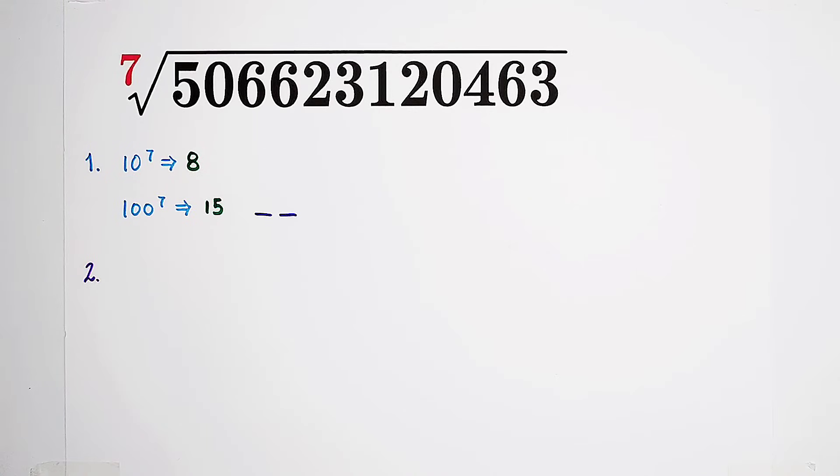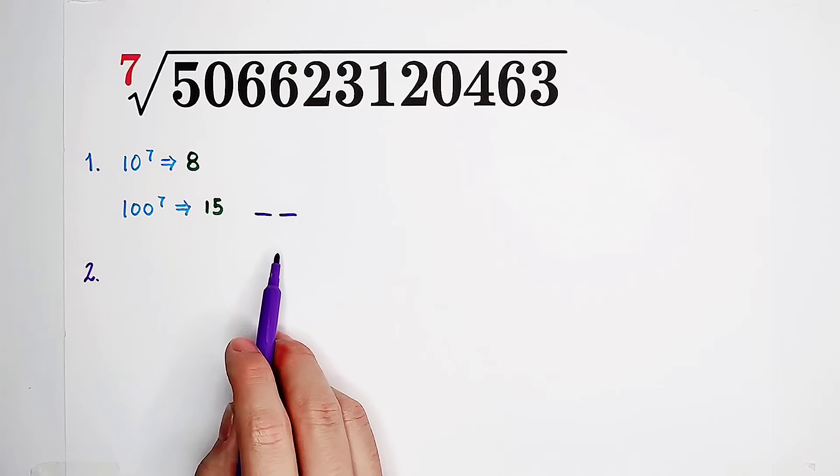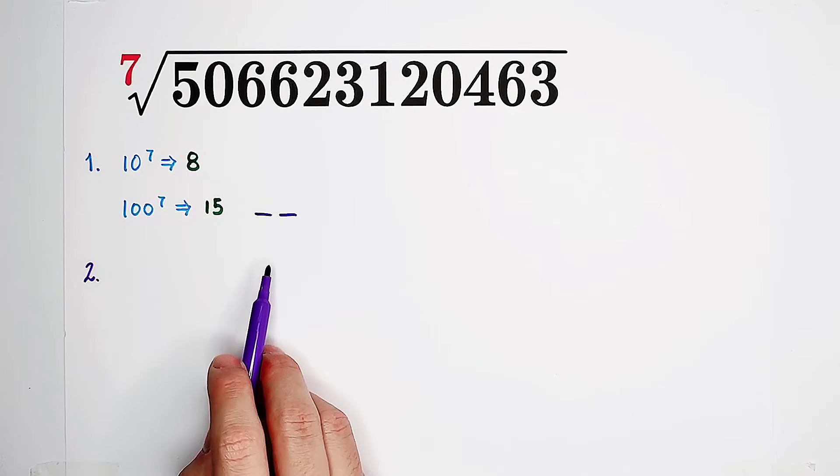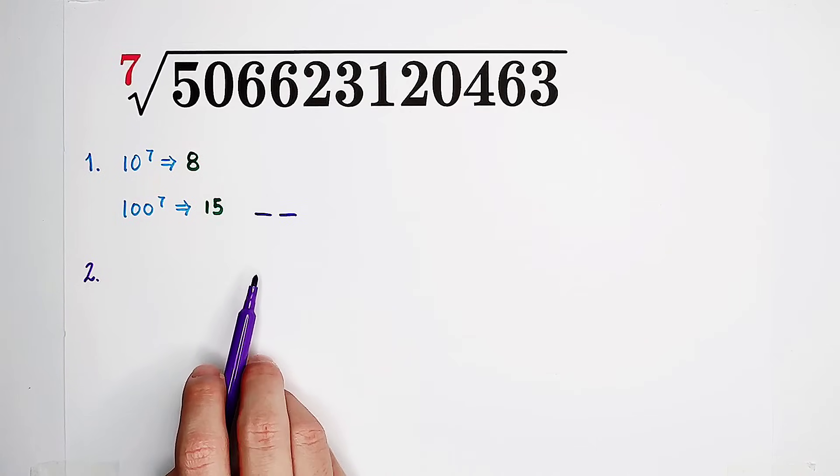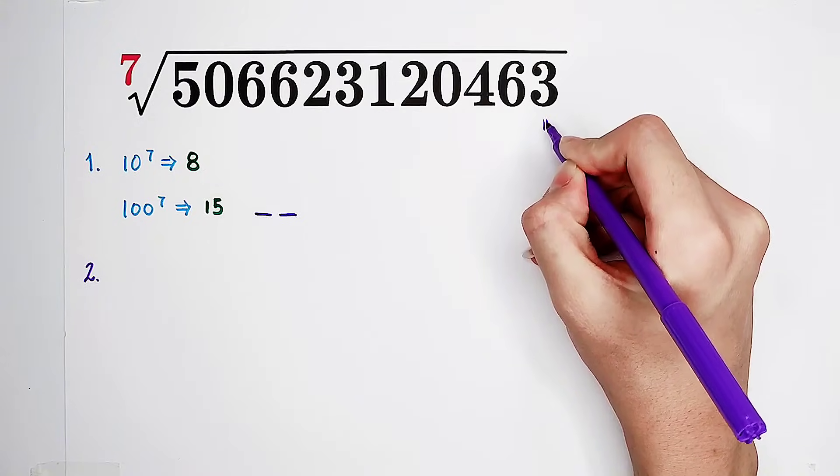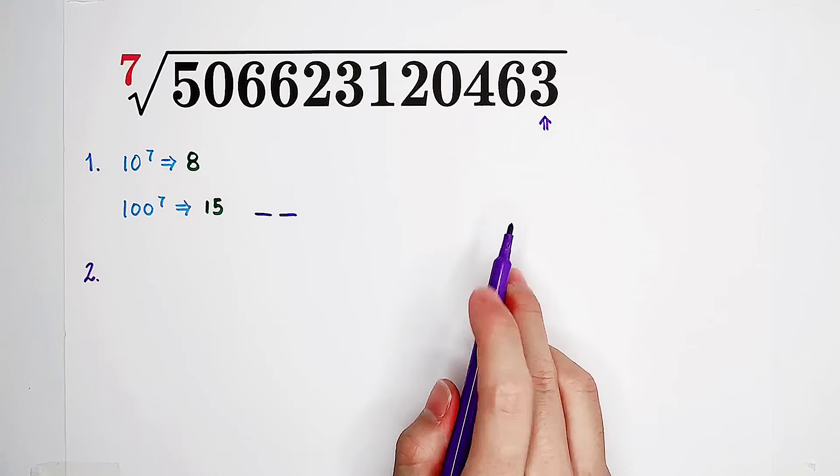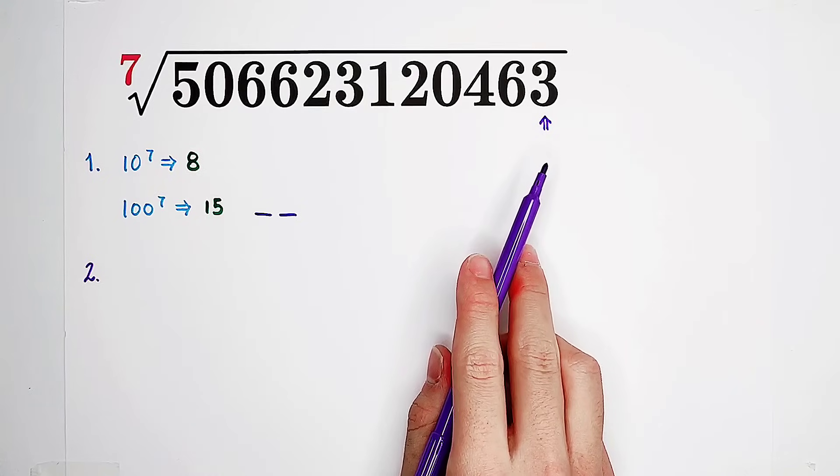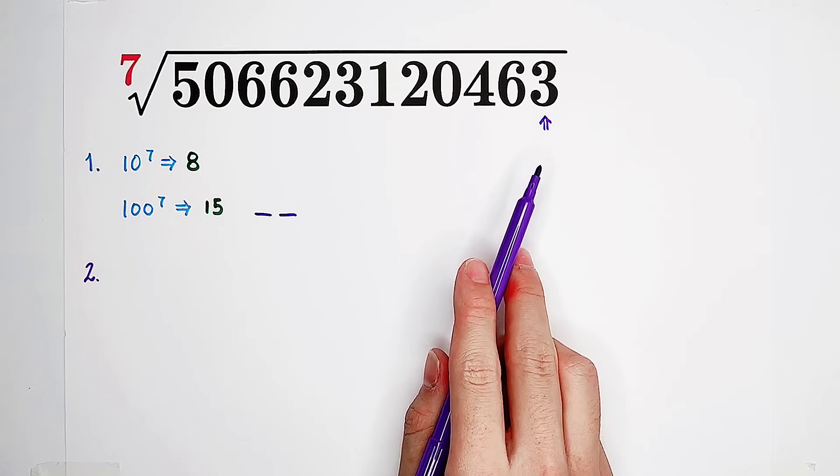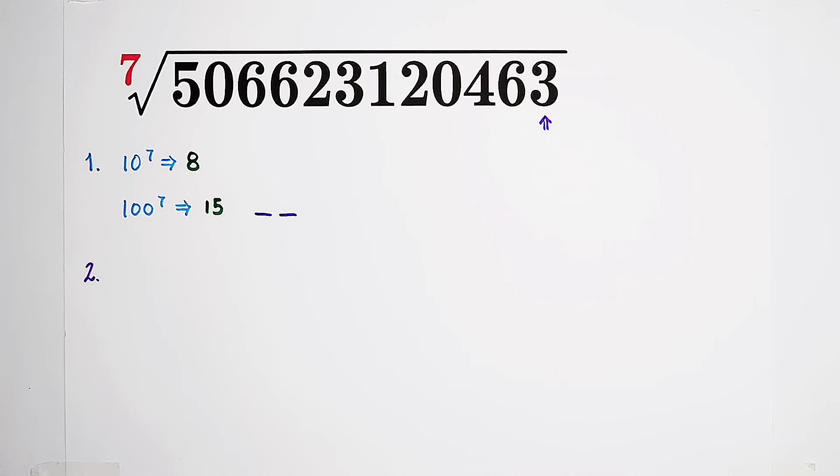I'm gonna do this: determine the unit digit. Okay, but how? Look at this. Here, the unit digit is 3. So we have to have a look, which number to the power of 7 has the unit digit 3? From 0 to 9, we have 10 cases, and we have to check all of them.